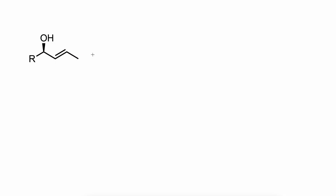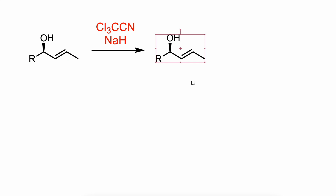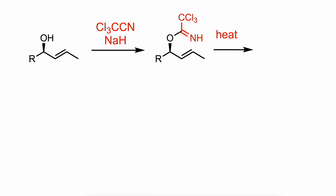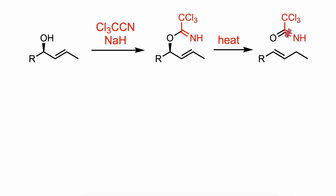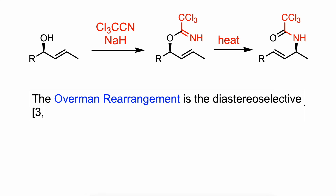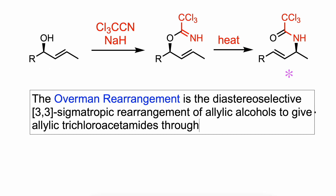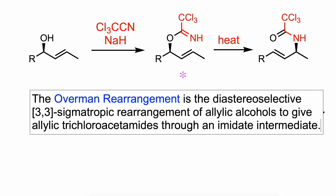Hello everyone. In this video I'm going to talk about the Overman Rearrangement. The Overman Rearrangement is the diastereoselective 3,3-sigmatropic rearrangement of allylic alcohols to give allylic trichloroacetamides through an imidate intermediate.